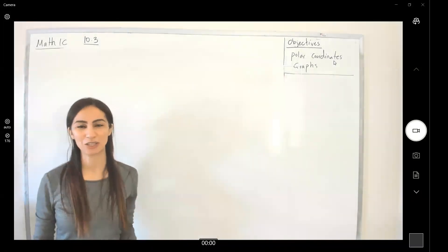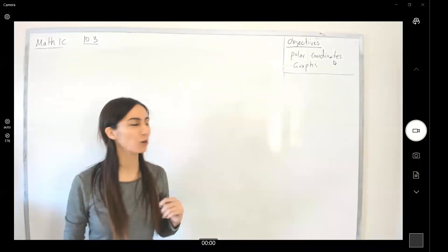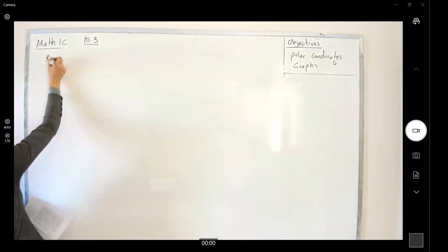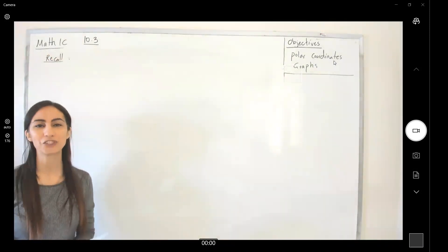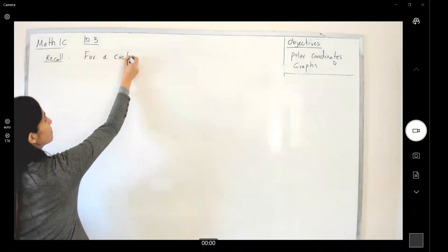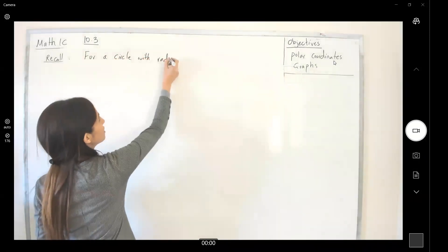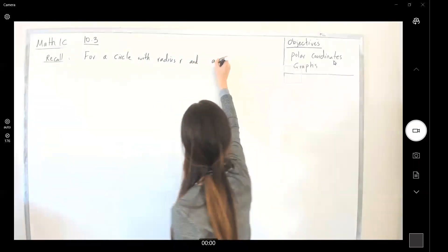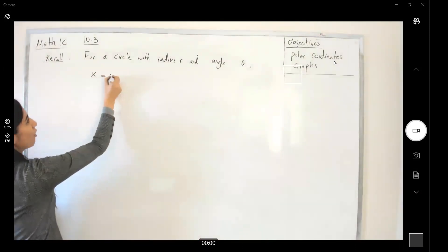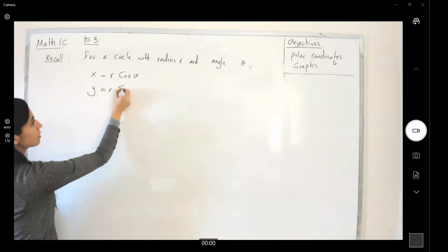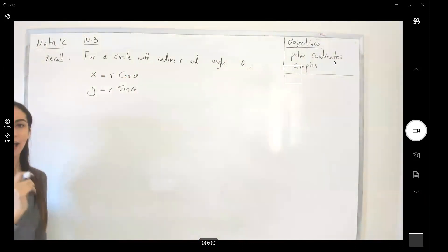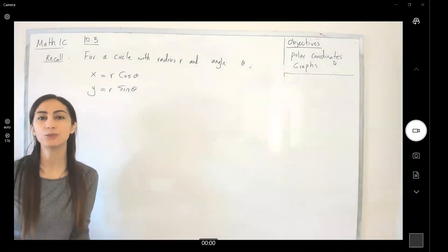Welcome to today's lecture. We're going to continue chapter 10 and talk about coordinates and their graphs. Let's review what we learned so far. We talked about the parametrization of curves, and for a circle with radius r and angle theta, the best parametrization is x equals r cosine theta and y equals r sine theta. This theta and r actually helps us define a new coordinate system.